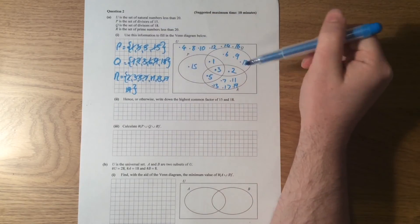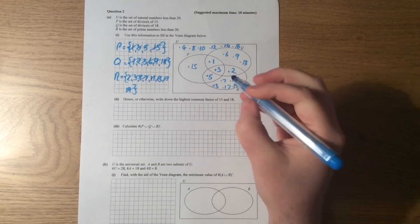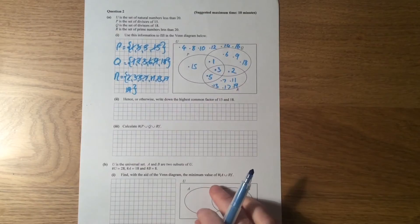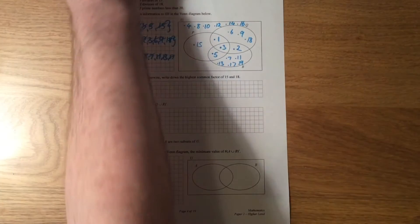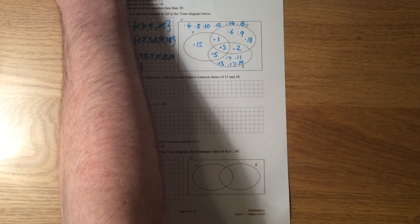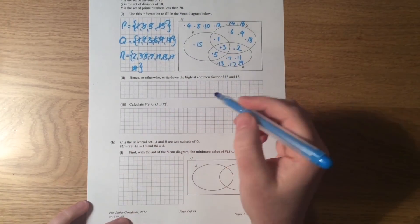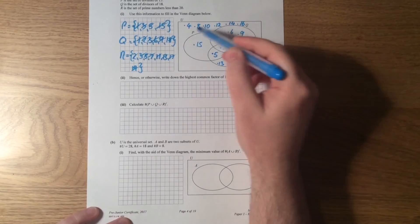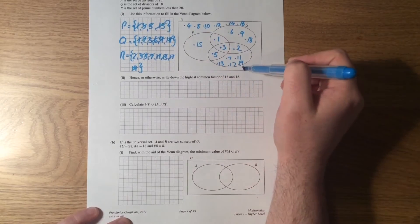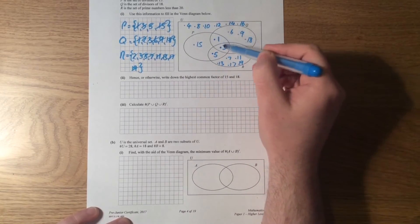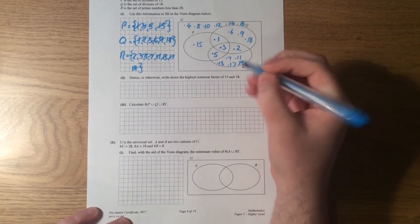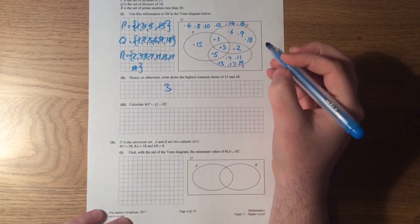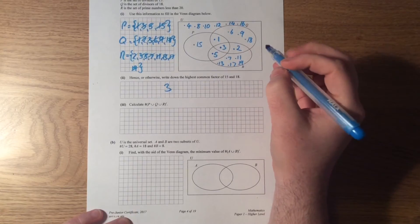All right, so 4, 8, 10, 12, 14, and 16 are not numbers that divide into 15 evenly, are not numbers that divide into 18 evenly, and are not prime numbers. Okay, so there you have it. All right, so that's part one. Let's have a look at part two. Okay, so part two says hence or otherwise write down the highest common factor of 15 and 18. Well, let's have a look at what factors are shared between 15 and 18—so that's P and Q—and it's 1 and 3, and the highest that's shared here is 3.